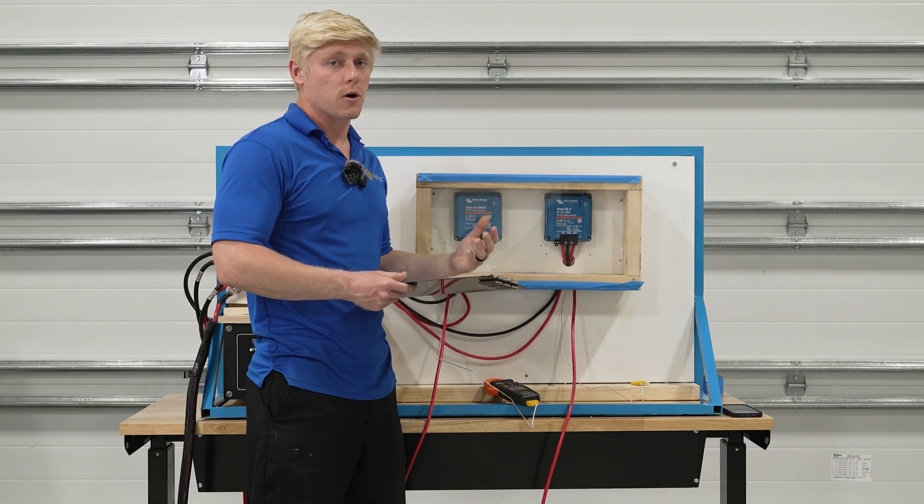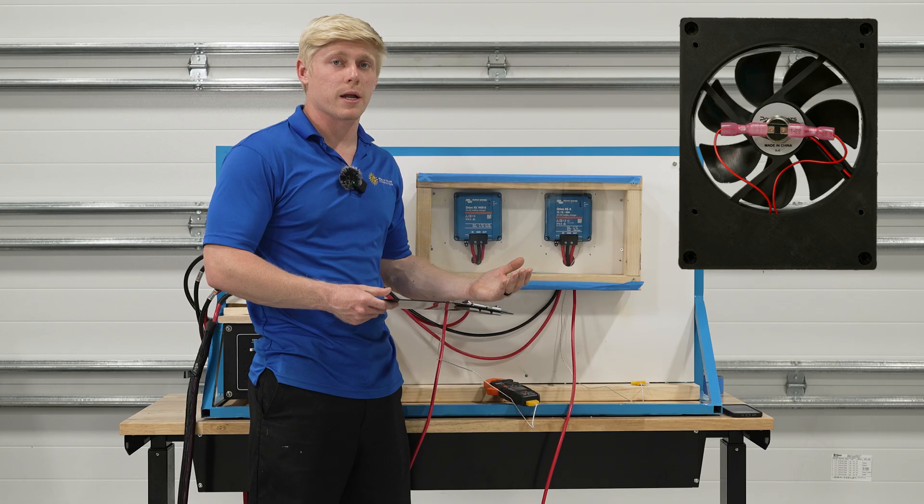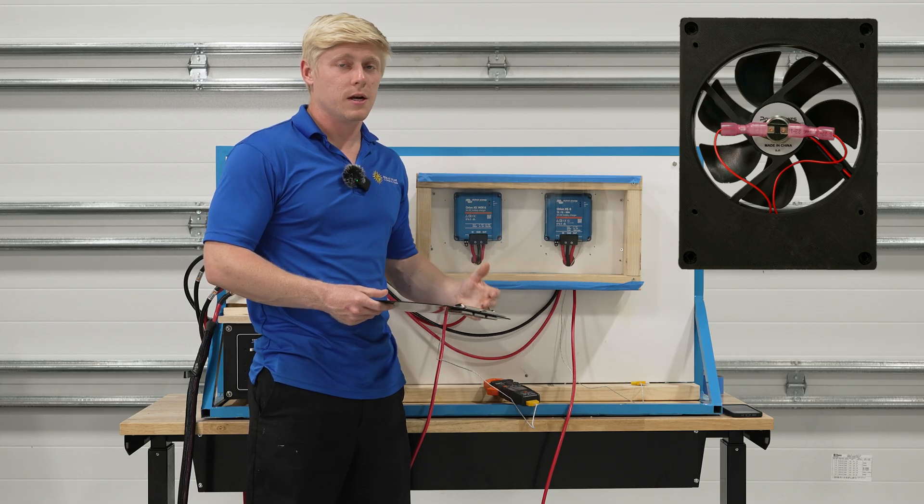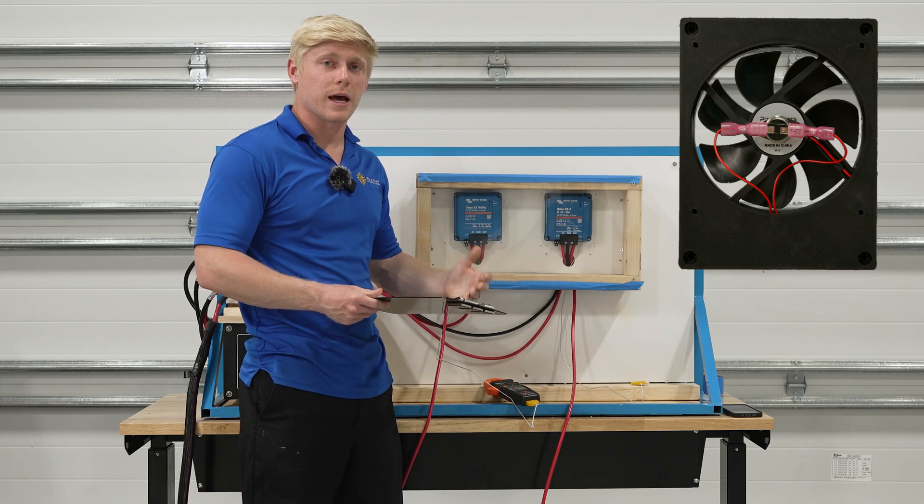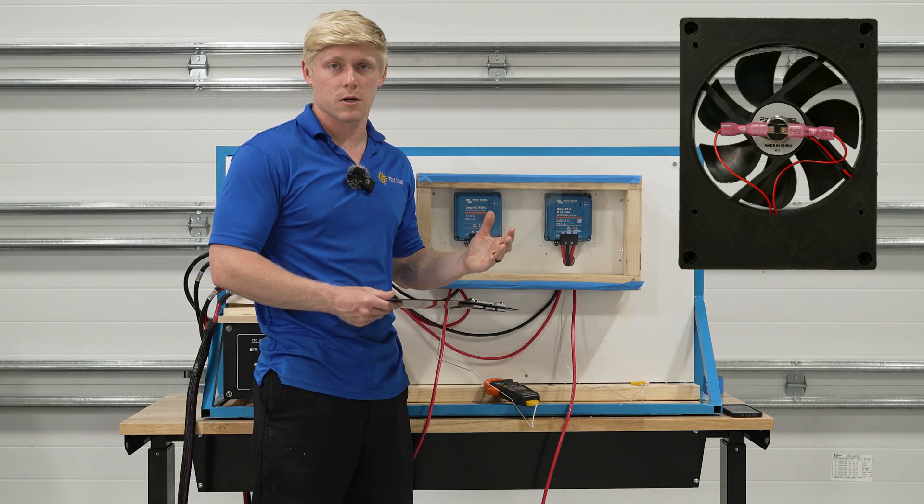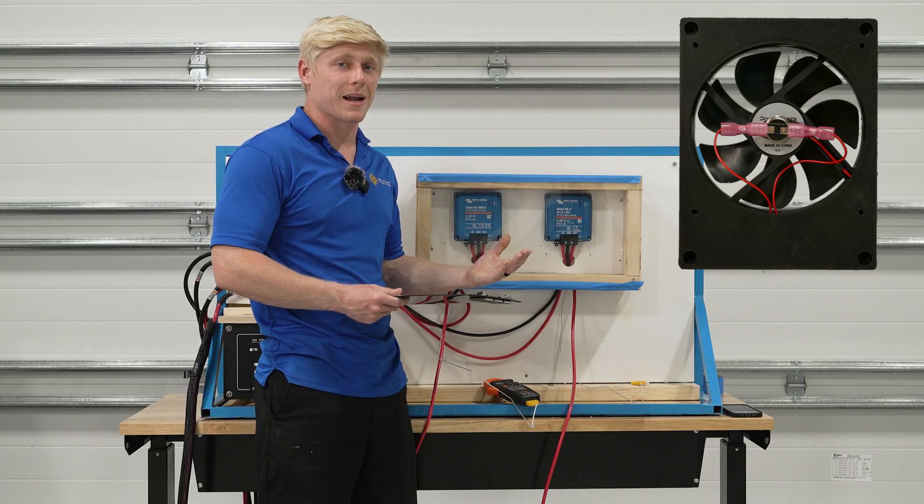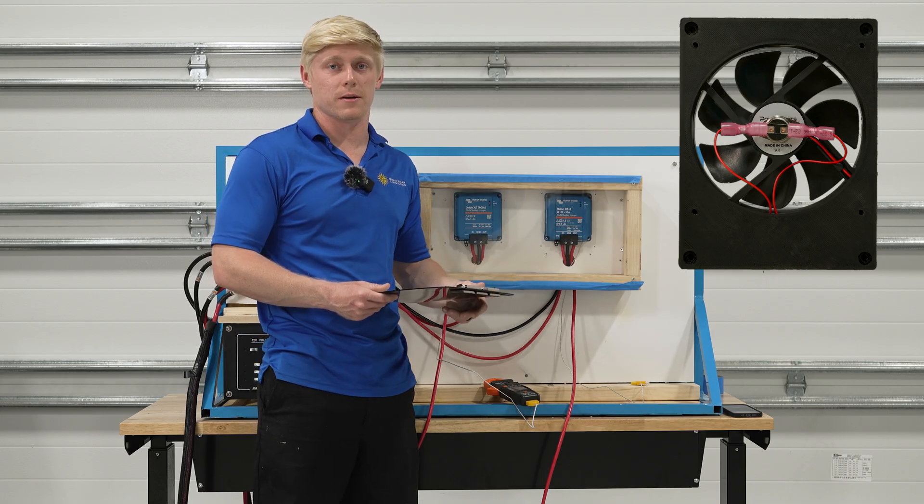So when we install Orions in a vehicle, we make sure we use the Orion XS fan adapter that's going to be linked in the description. It just blows cool air at the Orion. It has a temperature sensor so it turns on and off automatically, and it keeps the Orion at about 86 degrees Fahrenheit.